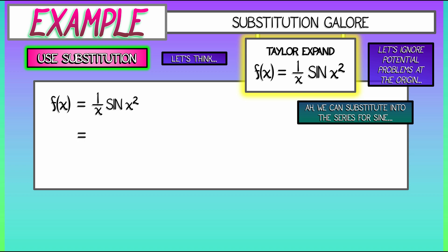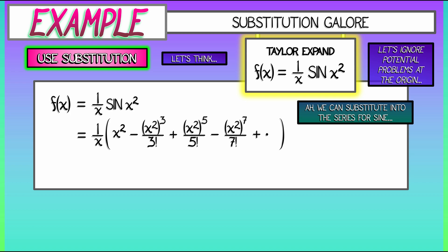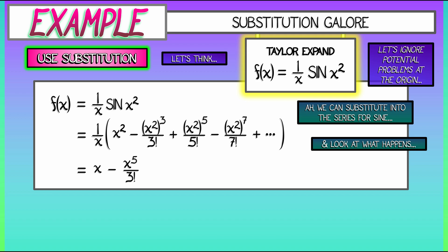Now let's substitute x² into the classical series for sine that we already know. I have that (1/x) out in front, and then I take the series for sine and substitute in x². So sin(x²) equals x² minus (x²)³/3! plus (x²)⁵/5! minus (x²)⁷/7! — keep going. This simplifies really nicely. That (1/x) out in front cancels all the way down the line. The first term is x²/x = x. The next term is x⁶/x = x⁵/3!. Then x⁹/5!, then minus x¹³/7!. This is so nice.